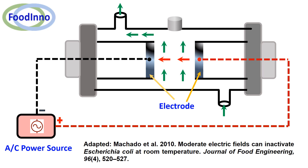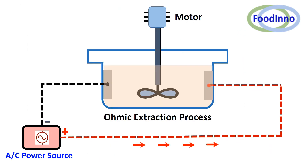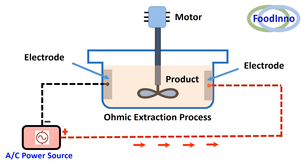Electrodes are placed on the ends of the cylindrical rods. In the ohmic heating extraction process, product is placed inside a rectangular container and electrodes are placed on the two sides of the container. Current flows across the product, which is agitated with mixing blades.